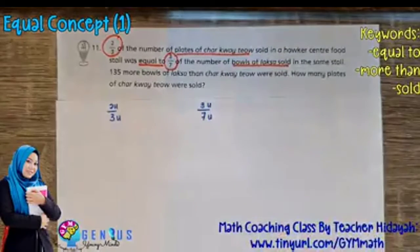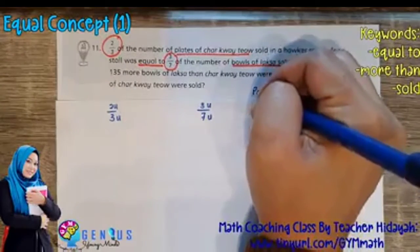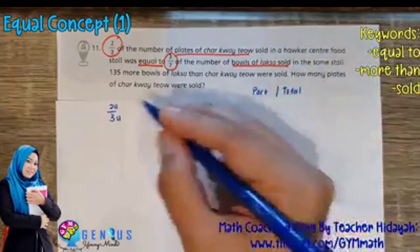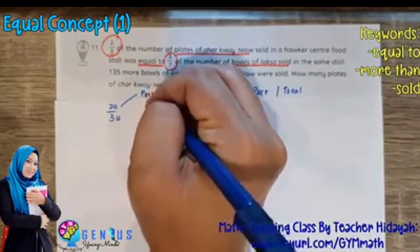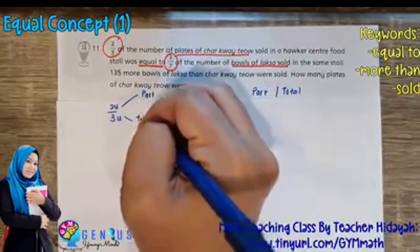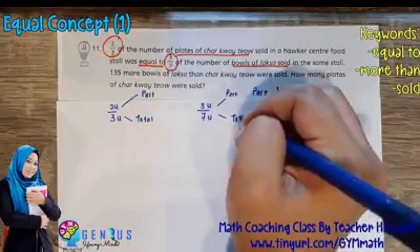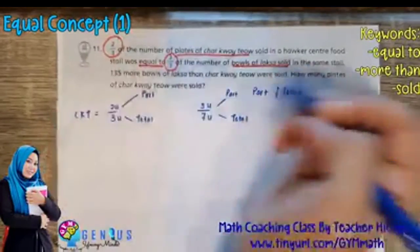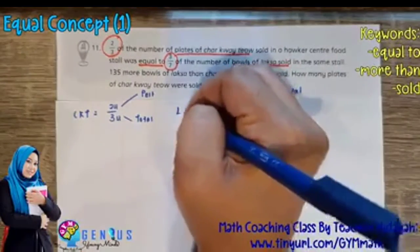For the equal concept, you must identify the part and the total within the units of the fractions. The numerator is always the part, and the denominator is always the total. So here the part is two and the total is three — referring to char kway teow — and the three-sevenths refers to laksa.